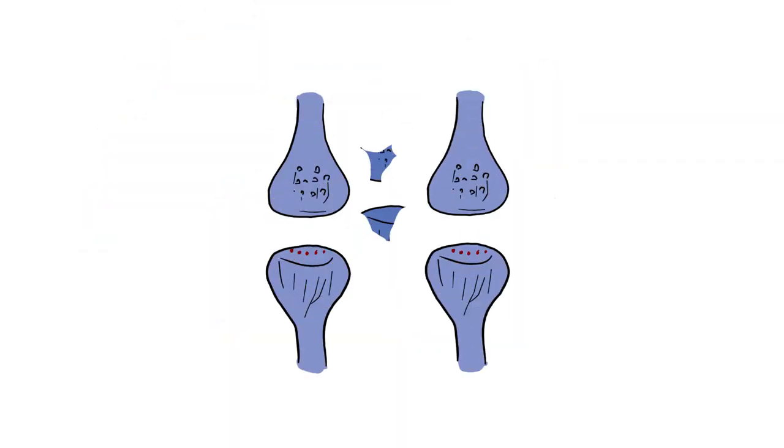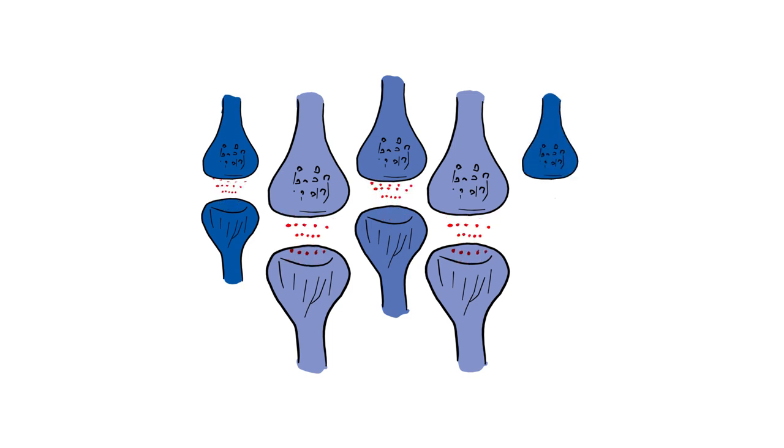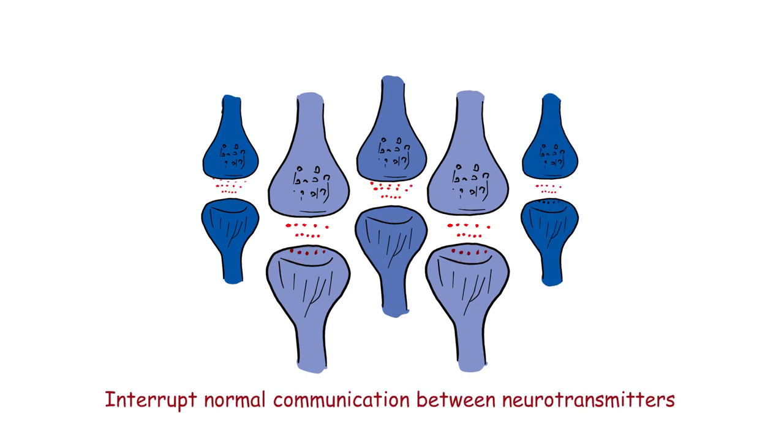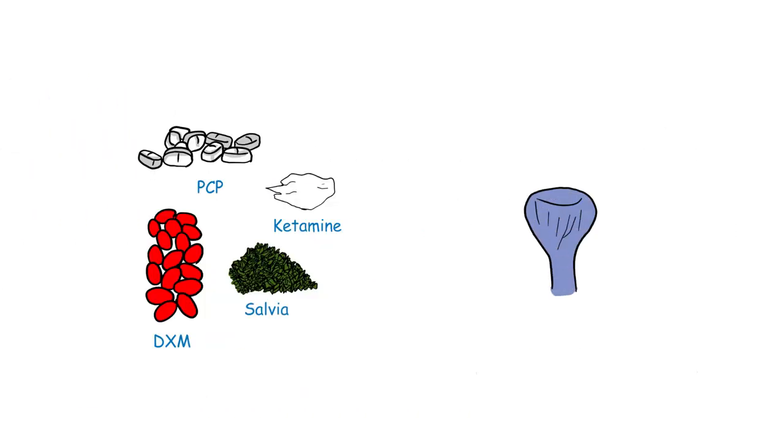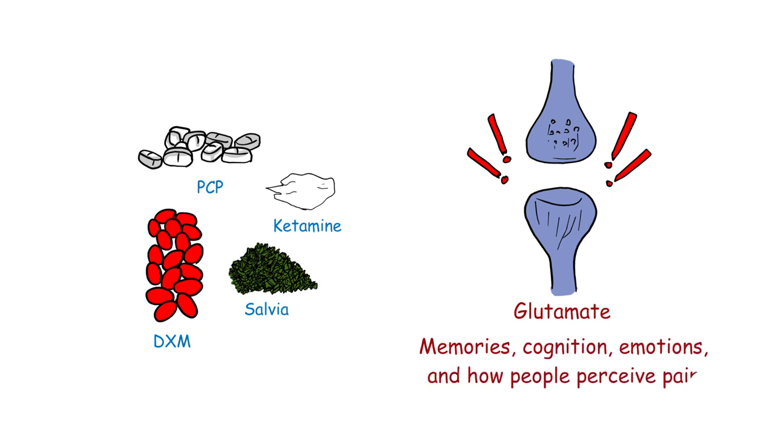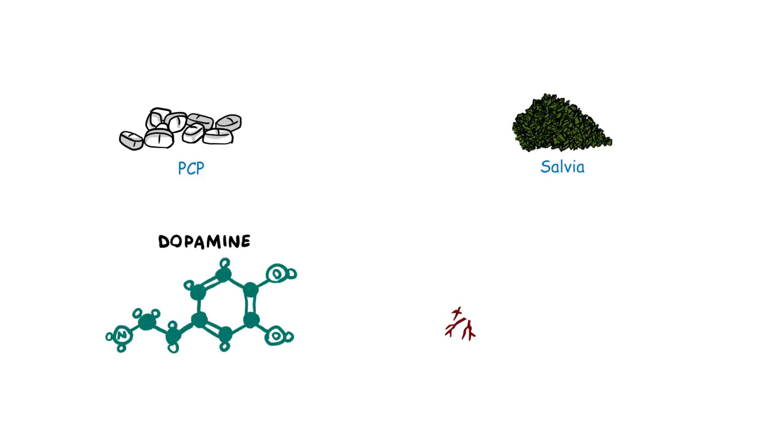It is not certain exactly how these drugs work in the brain, however, it is largely understood that they interrupt normal communication between neurotransmitters. Dissociative drugs are believed to disrupt the action of glutamate, a brain chemical that is involved with memories, cognition, emotions, and how people perceive pain. PCP interacts with dopamine as well, while salvia activates the kappa opioid receptor present on nerve cells.